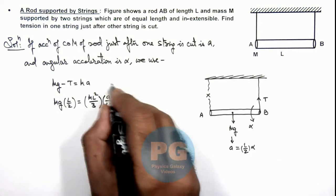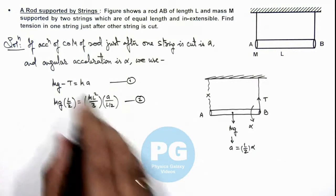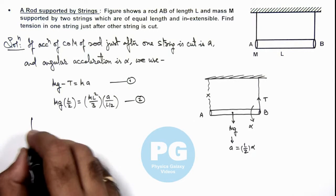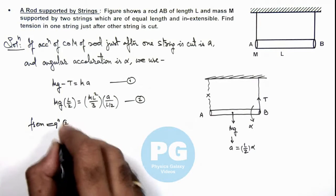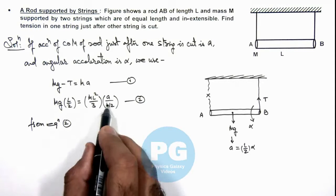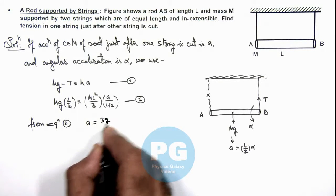So if this is our equation 1 and this is equation 2, we can simplify the two equations and here we can get from equation 2, the value we are getting for a is 3g/4.